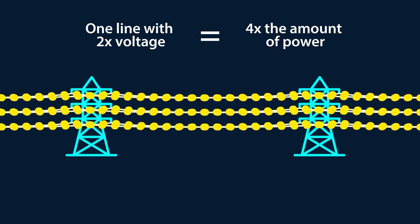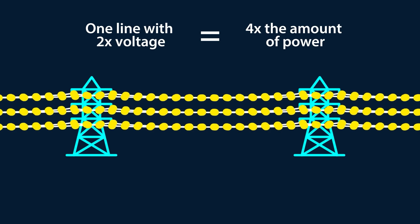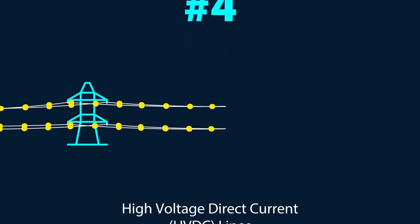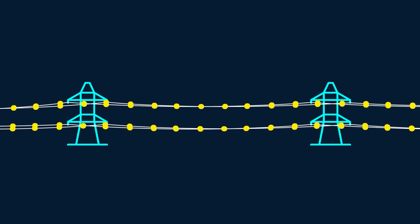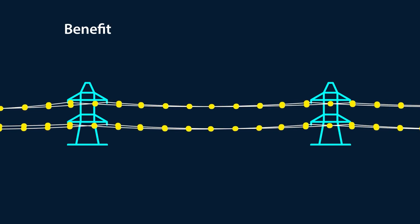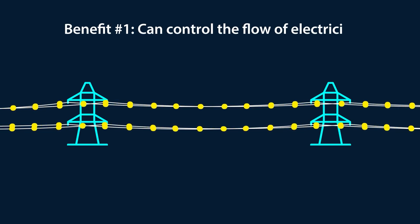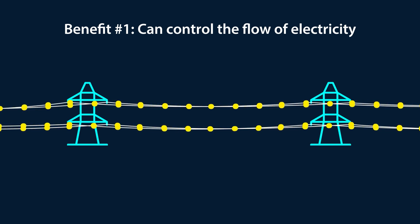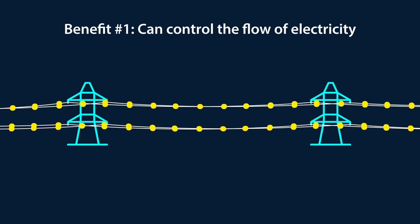Option four is to use high voltage direct current lines or HVDC lines. HVDC lines have several benefits over AC lines. First, the flow of electricity on HVDC lines can be controlled, which increases the utilization of the lines.